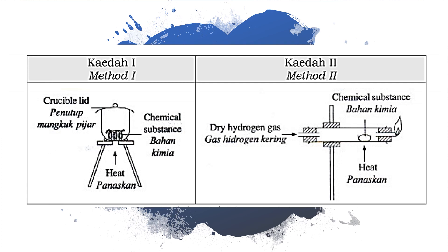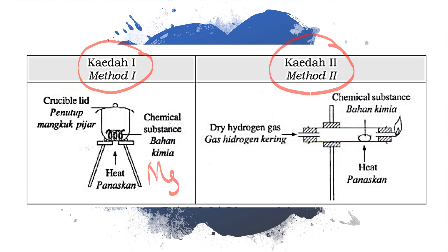We have two methods to determine the empirical formula. Method one is to determine the empirical formula for reactive metal — for example, magnesium. Method two is used to determine the empirical formula for less reactive metal, such as copper or lead, using copper oxide or lead oxide.